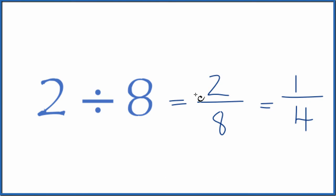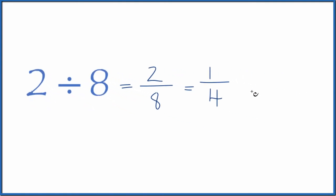So 2 divided by 8 equals the fraction 2 8ths, or simplified down to 1 4th. And you might know that 1 4th is equal to the decimal 0.25.